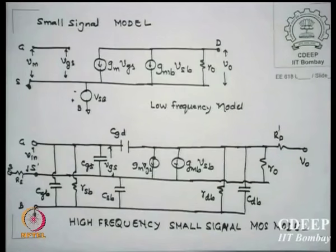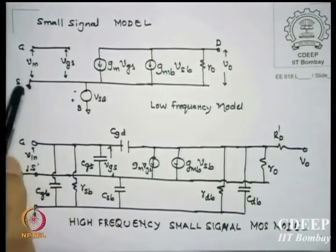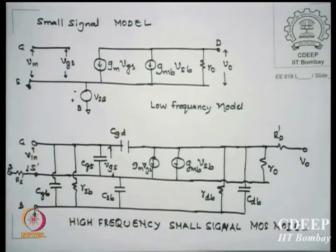We are continuing with our small signal model before we start amplifiers. As we have solved equations so far, the equivalent circuit of a MOS transistor is shown here. This is your gate, this is your drain, this is for common source, and this is your source which may or may not be grounded. There is also a bulk, and we believe that all capacitances are not relevant in the low frequency range — essentially 1/ωC is such that it open-circuits everywhere.